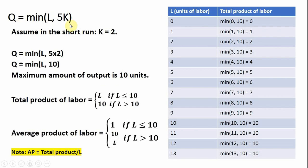Here is a fixed proportions production function where output is a minimum of what's in parentheses, where L is units of labor and K is units of capital. We're going to assume in the short run that capital is fixed at 2 units, so we substitute 2 in for K. So output is a minimum of L or 5 times 2, which is 10.